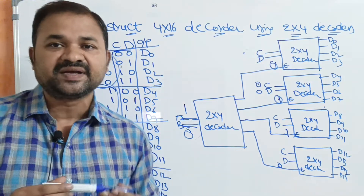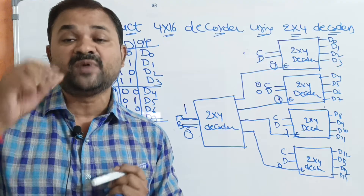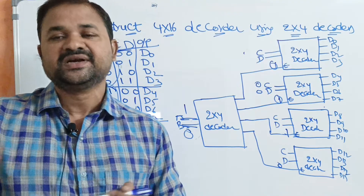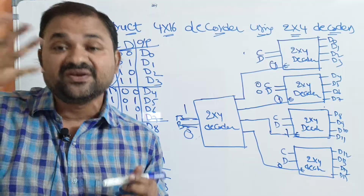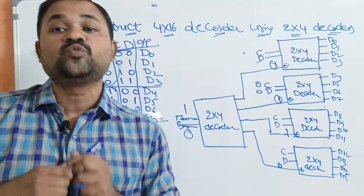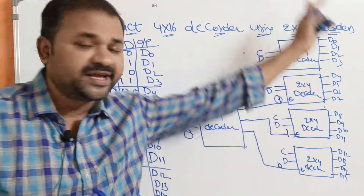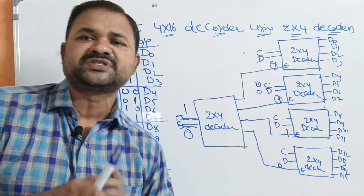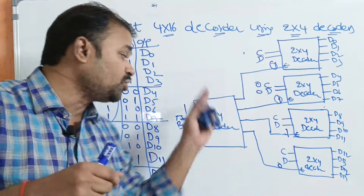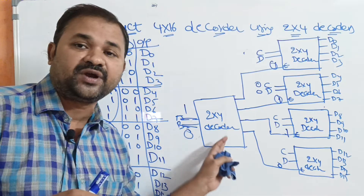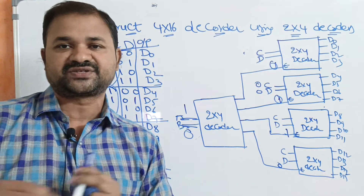This is the construction of a 4 by 16 decoder using 2 by 4 decoders. In total, we require 5 2 by 4 decoders: 4 decoders to produce outputs from D0 to D15, and one more 2 by 4 decoder to enable all the other 2 by 4 decoders.